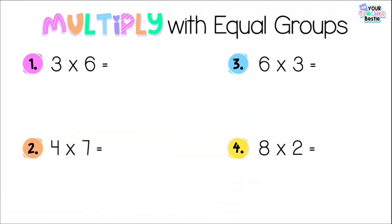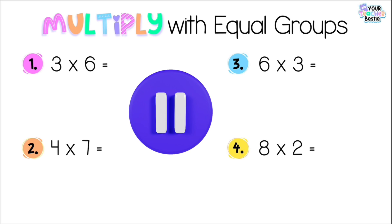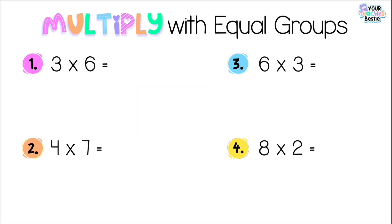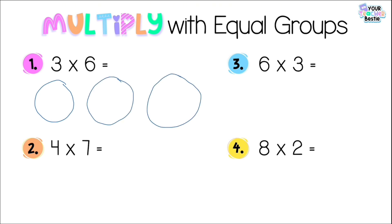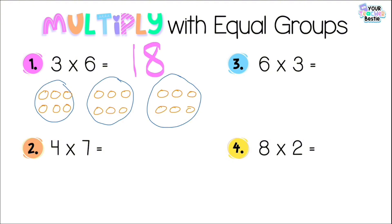It's bestie practice time! Feel free to pause the video or go along with me for more guided practice. Number one: three times six, also known as three groups of six. I'm going to draw three big circles, then draw six objects inside each of the three circles: one, two, three, four, five, six — then the same thing twice more. Skip counting by six: six, twelve, eighteen. So my total or my product is eighteen.